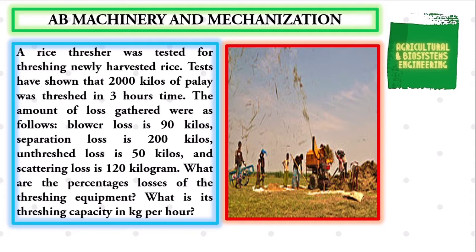The amounts of loss gathered were as follows: blower loss is 90 kilos, separation loss is 200 kilos, unthreshed loss is 50 kilos, and scattering loss is 120 kilograms.